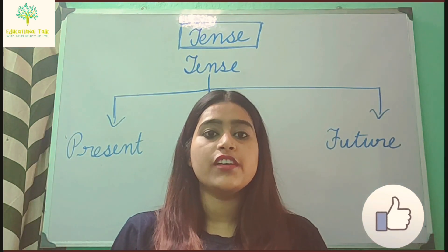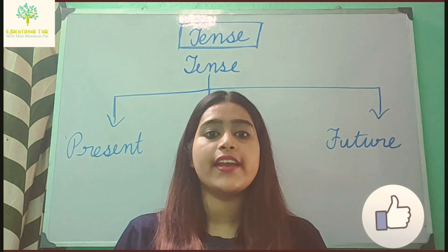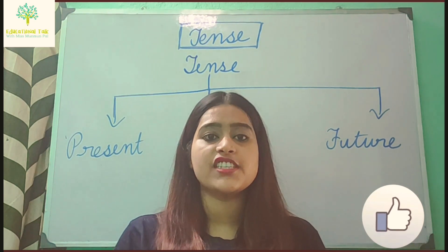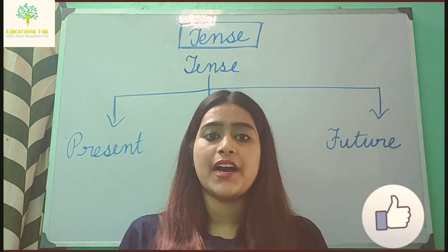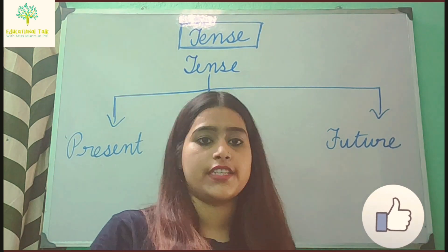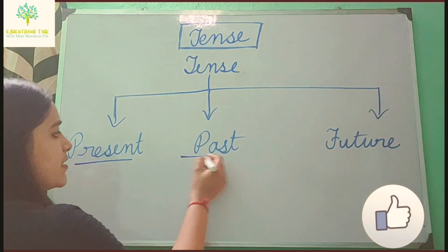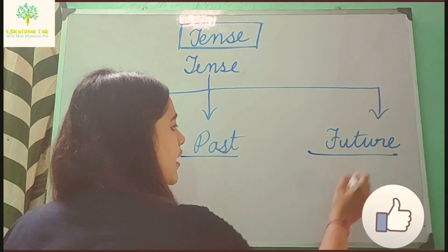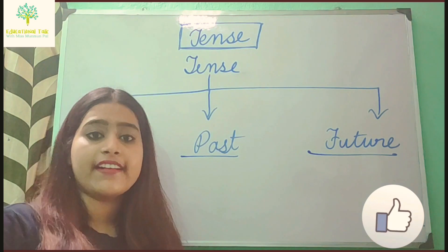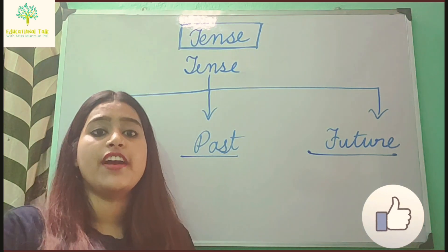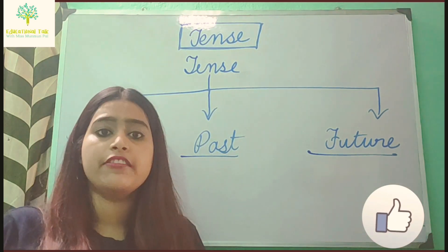Now I will tell you about the types of tenses. There are three main tenses: present, past, and future tense. These three tenses are again further divided into four tenses each.